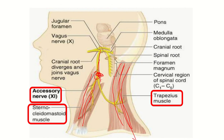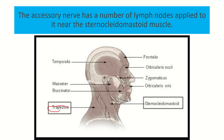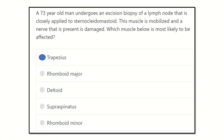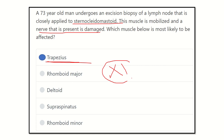In the posterior triangle, the sternocleidomastoid and trapezius are very close and they bound the posterior triangle of the neck — the sternocleidomastoid forms the anterior border and the trapezius forms the posterior border. Our final answer is trapezius, because the nerve close to the sternocleidomastoid is the spinal accessory nerve (CN XI), which also supplies the trapezius muscle.